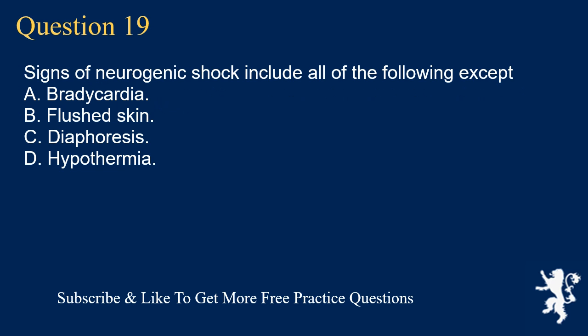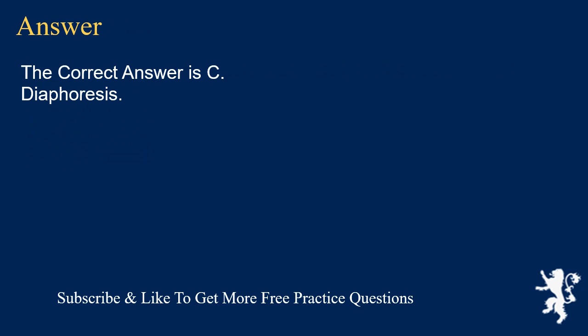Question 19. Signs of neurogenic shock include all of the following except: A. Bradycardia. B. Flushed skin. C. Diaphoresis. D. Hypothermia. The correct answer is C. Diaphoresis.